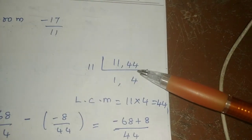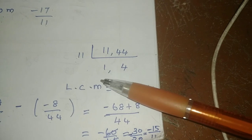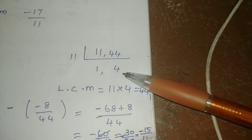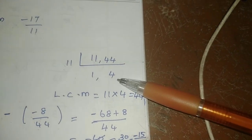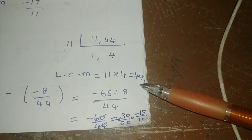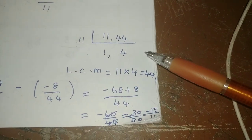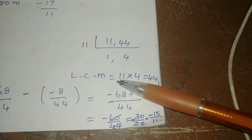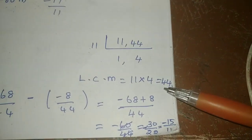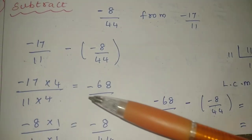Next, we find the LCM of 11 and 44. The 11 table: one time 11, four times 11 is 44. So 11 into 4 is 44. Because the value is one time 11, and 4 times is 44. So the LCM is 44.